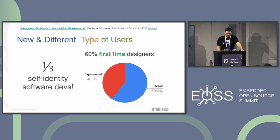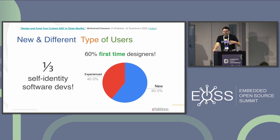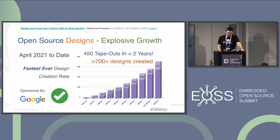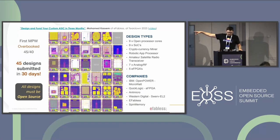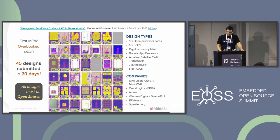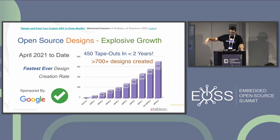The MPW stands for multi-project wafer. They take all submissions — about 40 designs every quarter — group them together, and that becomes something imaged on a wafer to produce chips for accepted participants. You can see how submissions have gone up a lot over time: the first run had 37 projects, but very quickly they started getting way more submissions than capacity. When they launched this, there was skepticism that they'd get 40 open source designs every quarter, but it's become quite popular.